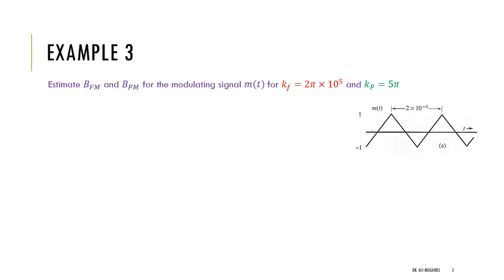Let's start with Example 3. The example says: estimate the bandwidth of the FM signal and the bandwidth of the PM signal for the modulating signal M(t) shown in the diagram. We are told that K_f and K_p are given by specified values.